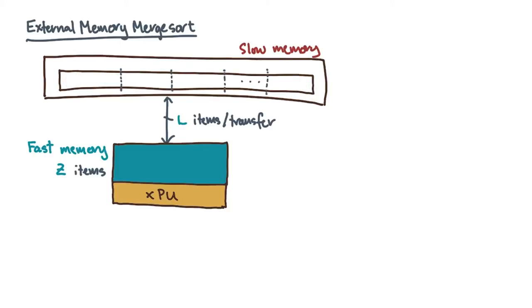Start by logically dividing the input into chunks of size proportional to, but no greater than z, so that a single chunk fits in fast memory.